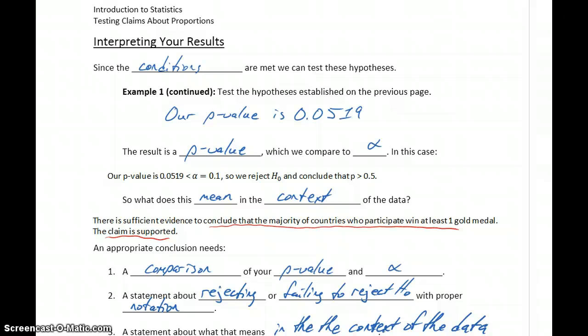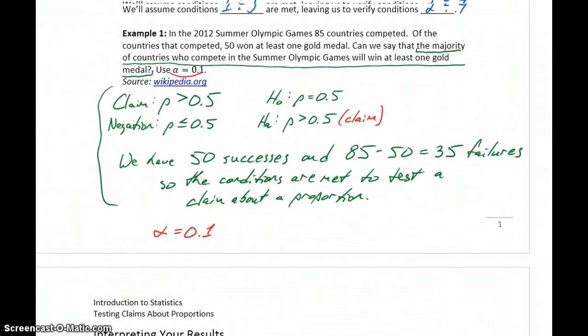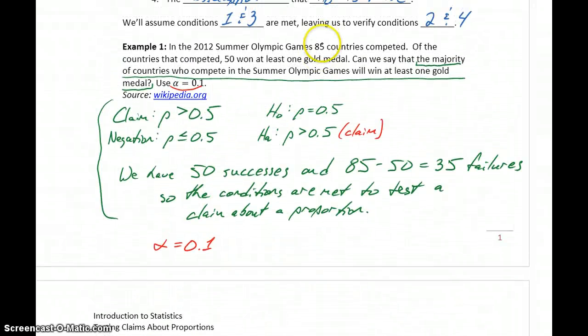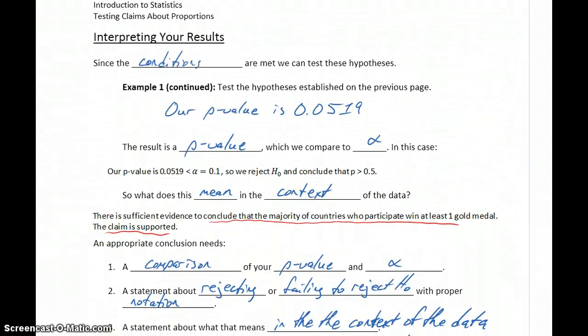We had certain sample data. So we had the 85 countries who competed, 50 at least won one gold medal. We can't change that information. That's historically true. That's what actually happened. So we can't change our hypotheses. We can't change the sample data. We can't change the p-value.